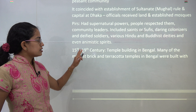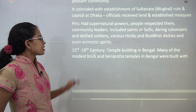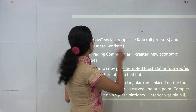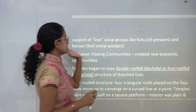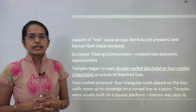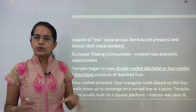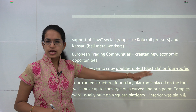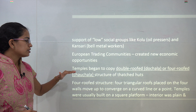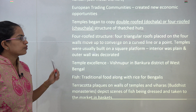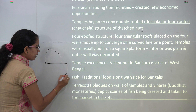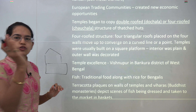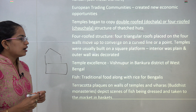During the 15th to 19th century, many temples were built in Bengal. Most of them were terracotta temples and the people who worked on those were kolus and kansaris — kolus were the oil pressers and kansaris were the bell metal workers. As the European trading community invaded the area, new economic activities started to come up. The temples were mainly double-roofed, known as dochala, or four-roofed, known as chauchala. The chauchala had four triangular roofs on a square base. The interior was plain, but towards the outer side they decorated it with various designs.